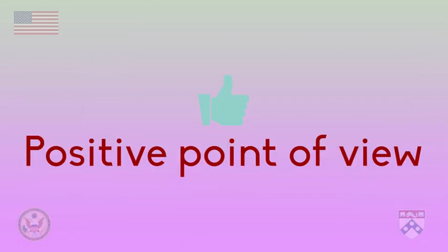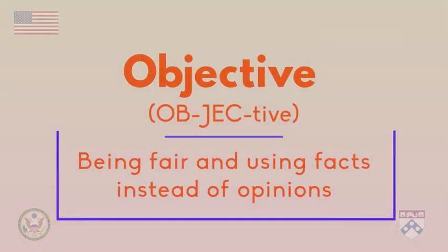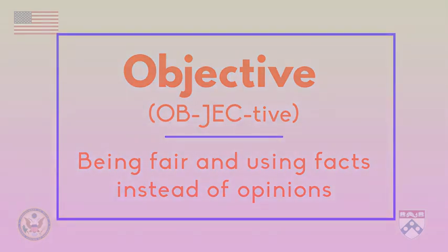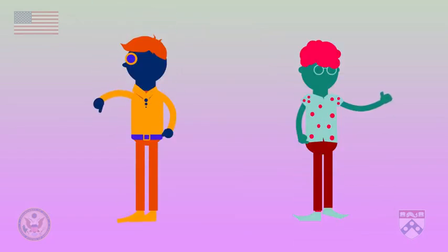We're missing information about any other points of view. We can say that the news story probably wasn't objective. Being objective means being fair and based on facts instead of opinions. In order to be objective, a news story should show more than one point of view — for example, people who agree with a topic and people who disagree with it. Otherwise, we might end up with a one-sided story.